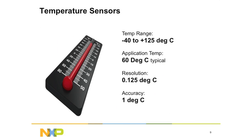Performance: all NXP temperature sensors can operate over a wide range of minus 40 to plus 125 degrees centigrade. Typically, these devices are used to monitor temperatures in the range of plus 60 degrees centigrade. The basic resolution or ability to detect small changes is one-eighth of a degree centigrade, with an accuracy of typically one degree centigrade or better. All NXP temperature sensors are small footprint surface mount devices that consume very little supply current and operate from low voltage supplies, as found in portable electronics.